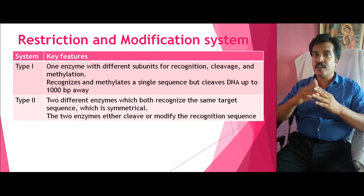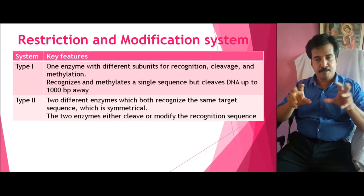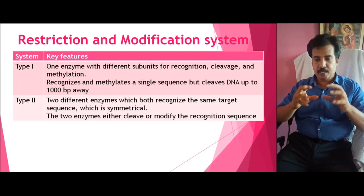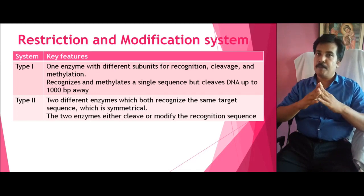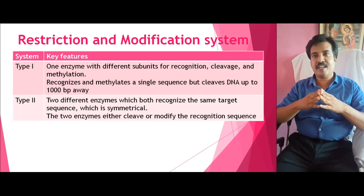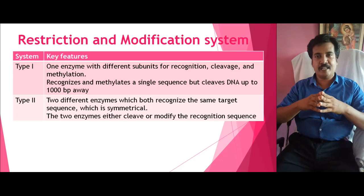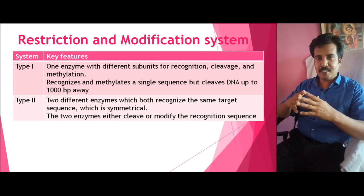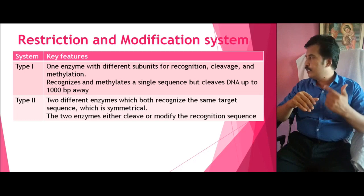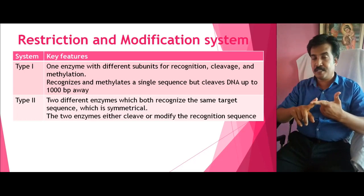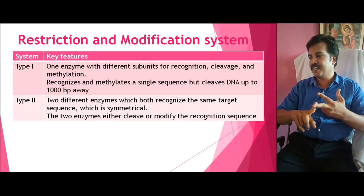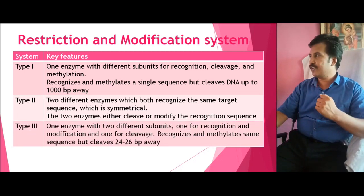In Type 2, there are two different enzymes. Both enzymes recognize the same target sequence, which must be symmetrical in nature. Both enzymes can either cleave or modify the recognizing sequence. So whereas Type 1 is a single enzyme with different subunits, Type 2 comprises two separate enzymes that both recognize the symmetrical target sequence, and each can either cleave or modify that sequence.